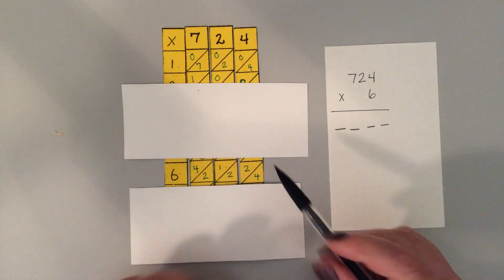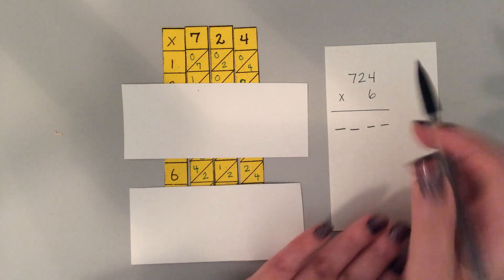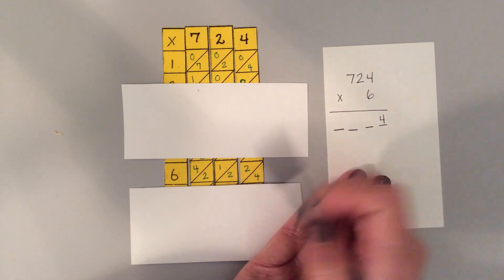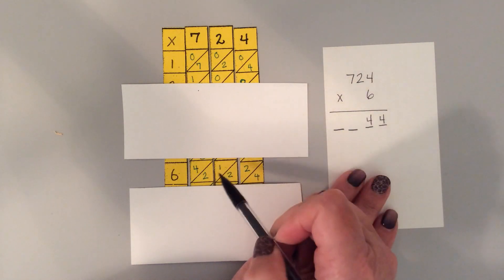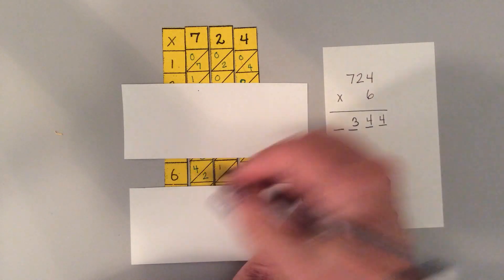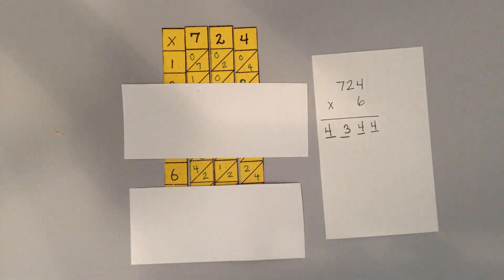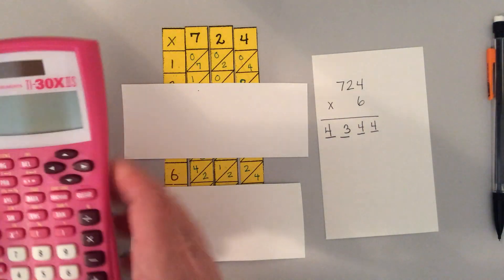Then all I need to do is add these diagonals up. So 4 plus 0 is 4, and then 2 plus 2 is 4, and then this is 1 plus 2 is 3, and then 4 plus 0 is 4. So 724 times 6 is 4,344, and you'd want to check that on a calculator.